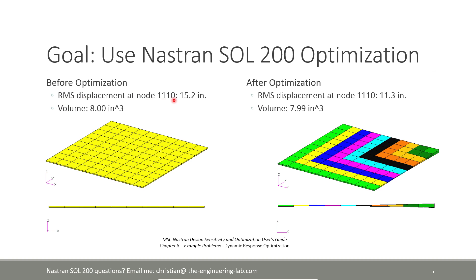We are going to take the root mean square of displacement at node 1110. The RMS displacement at the initial design is 15.2. After optimizing, the new RMS displacement is 11.3 — it has been minimized. One requirement is that we keep the volume of this plate at approximately the original value of 8 units. The one thing we let vary is the thickness of each zone.